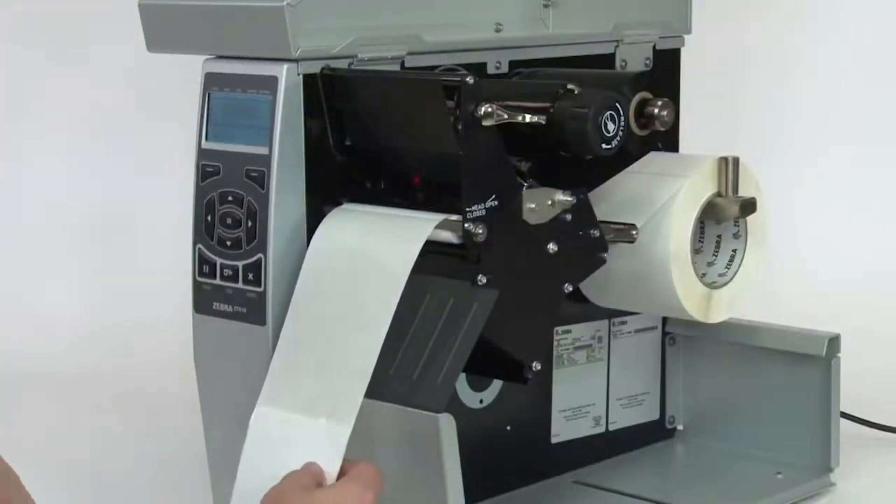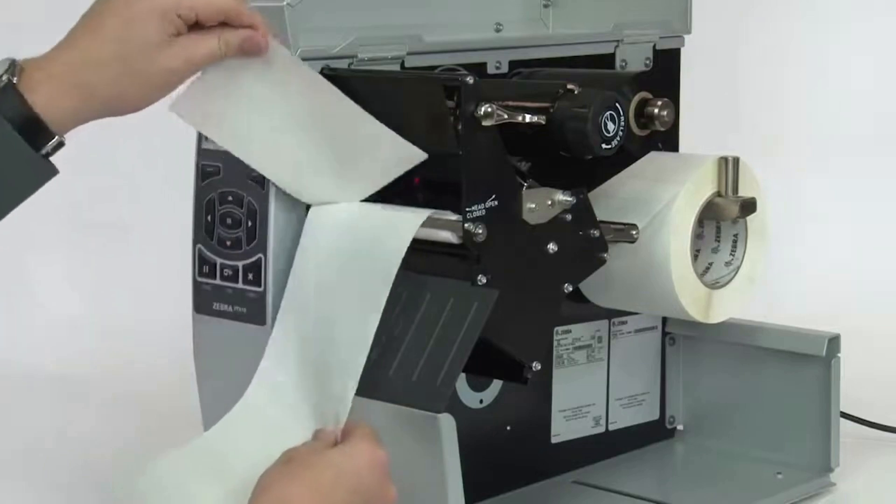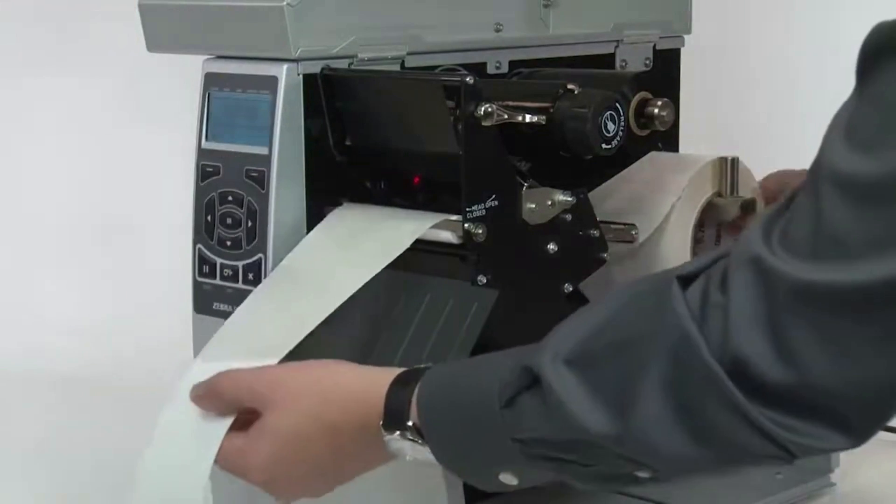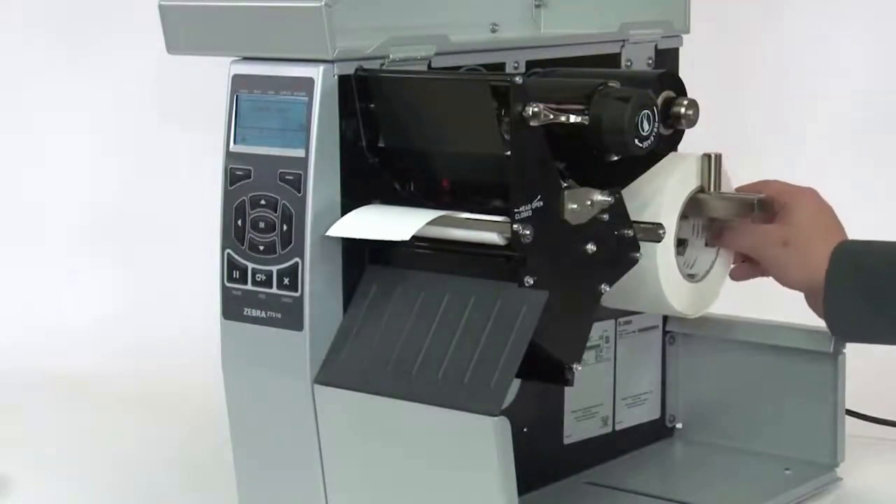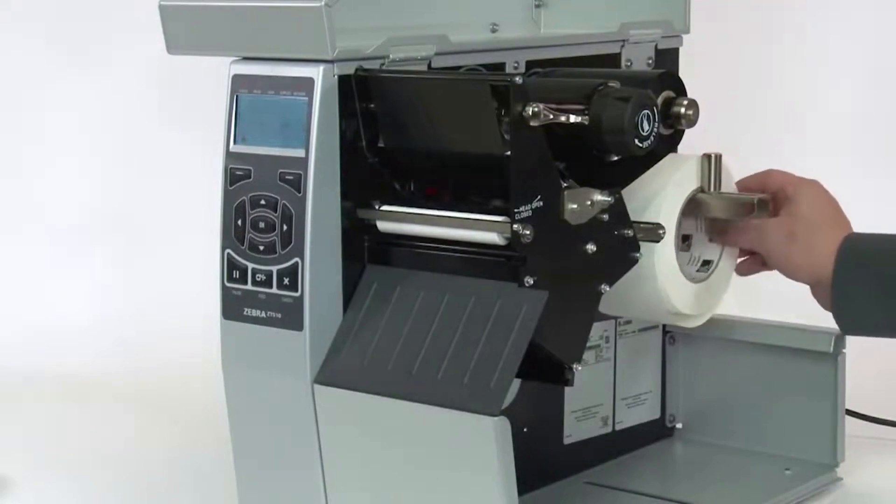If your media has a gap, also referred to as a web, remove labels and rewind the roll to ensure only liner is under the media sensors. If your media has holes or notches, or is a continuous roll with no start position features, remove the media entirely.